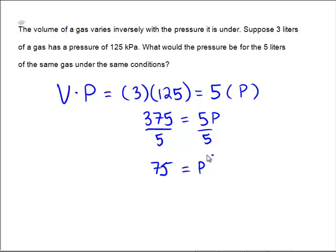And so what was the pressure on that second situation? Turns out the pressure must have been 75 kilopascals because 75 is what you have to multiply against 5 to give you the same constant product of 375. Now we'll see you next week.